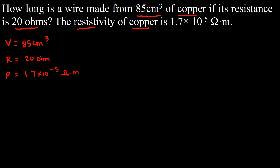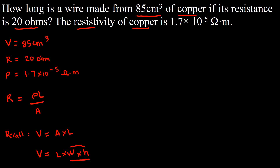Initially this might confuse you because you have learned that resistance R equals resistivity multiplied by L divided by area, and there is no volume in this equation. However, you have to recall that volume is actually equal to area times length. For example, the volume of a rectangle is length times width times height, and multiplying width times height gives area. So from the given volume, we could actually come up with the area.